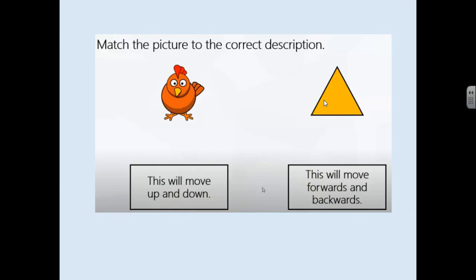Match the picture to the correct description. There's a picture of a chicken and a triangle and in the boxes over here it says this will move up and down, this will move forwards and backwards. So have a discussion with an adult who's helping you or your brother or sister who are helping at the moment.